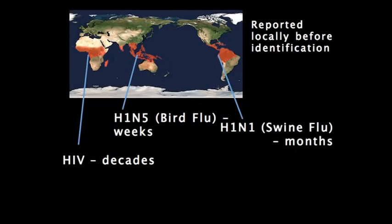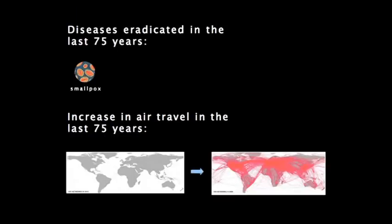Some of the major outbreaks we have seen over the past few decades have been reported openly — weeks and months online in the case of bird flu and swine flu, and more locally in terms of HIV for decades before they were finally identified. In the last 75 years, we've only eradicated one disease, which is smallpox, and yet air travel has increased such that a pathogen could travel to any part of the world in 24 hours, or 72 hours if you fly United.